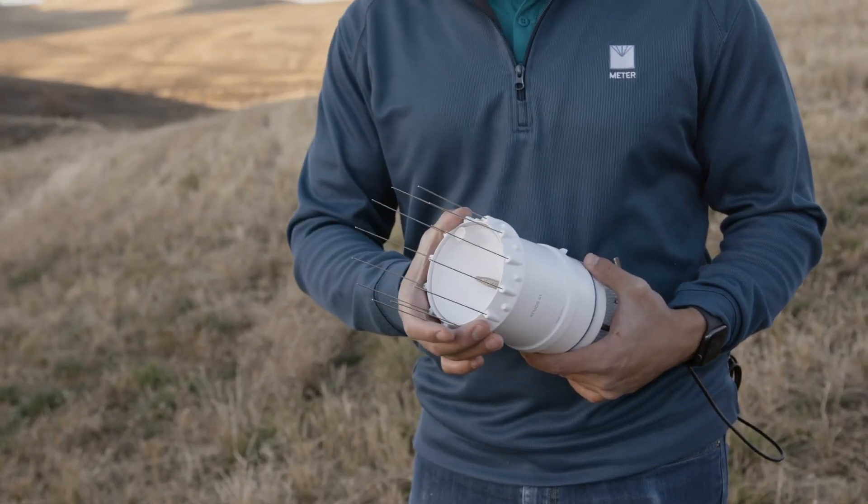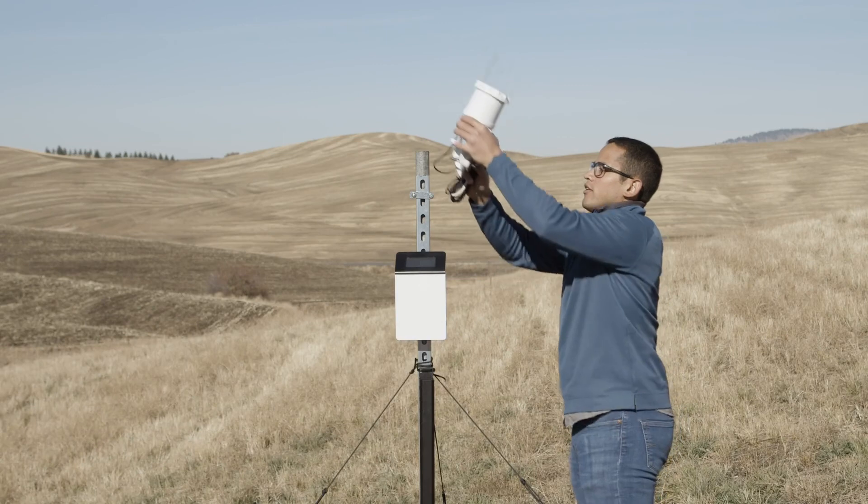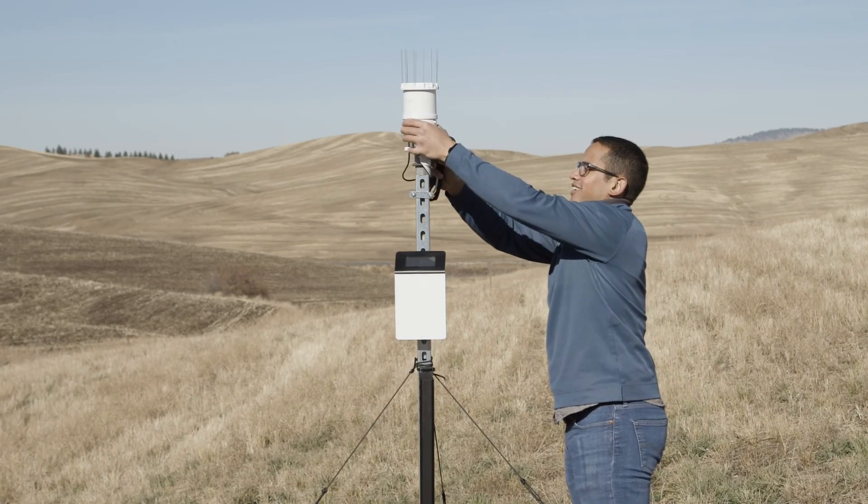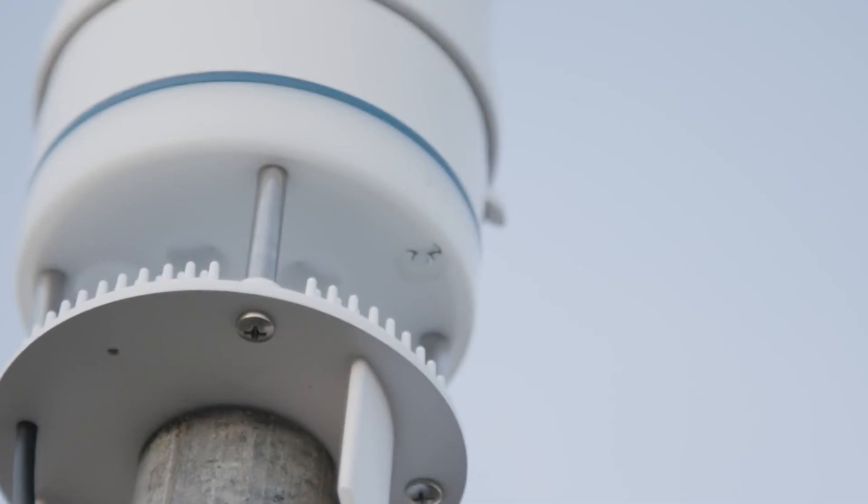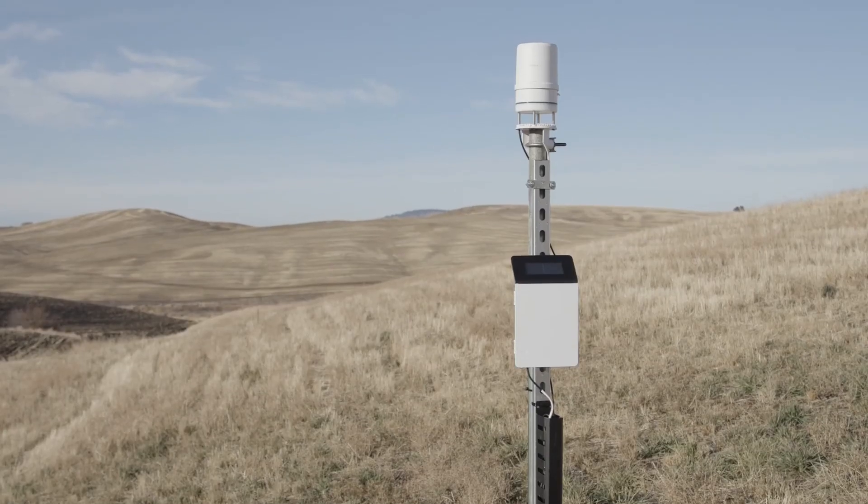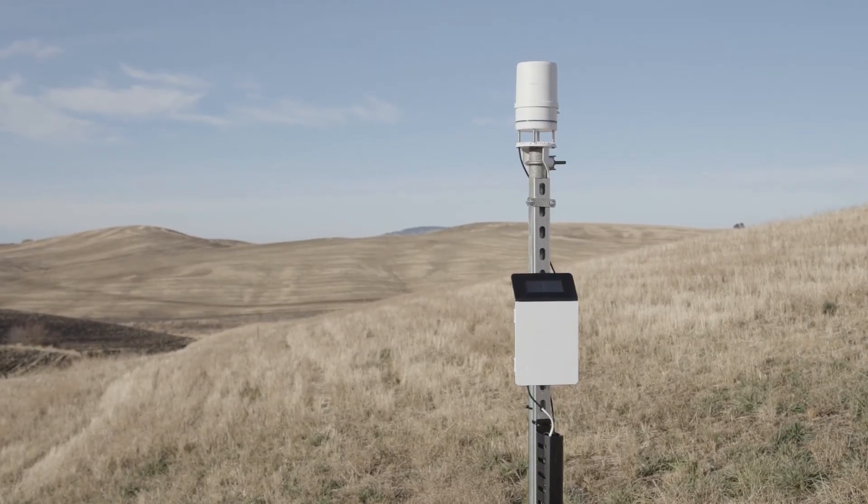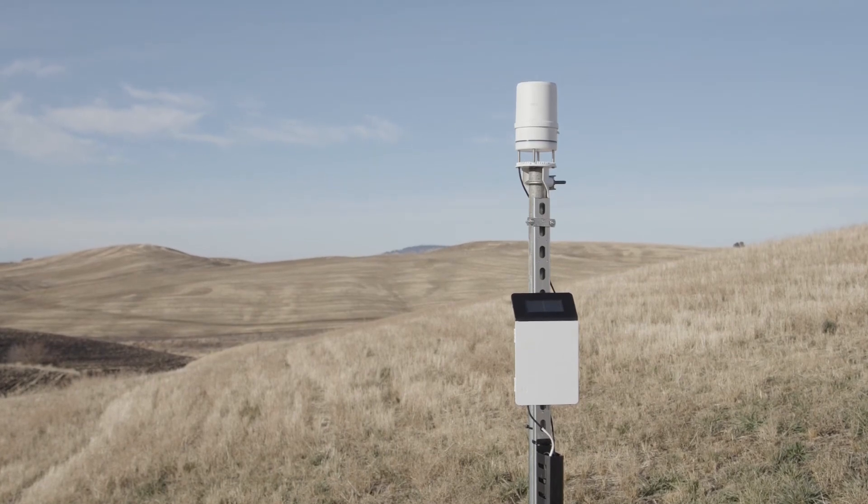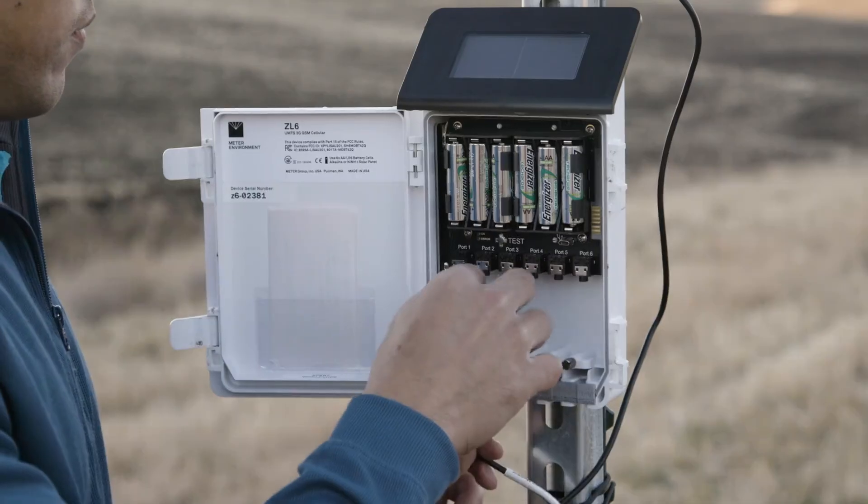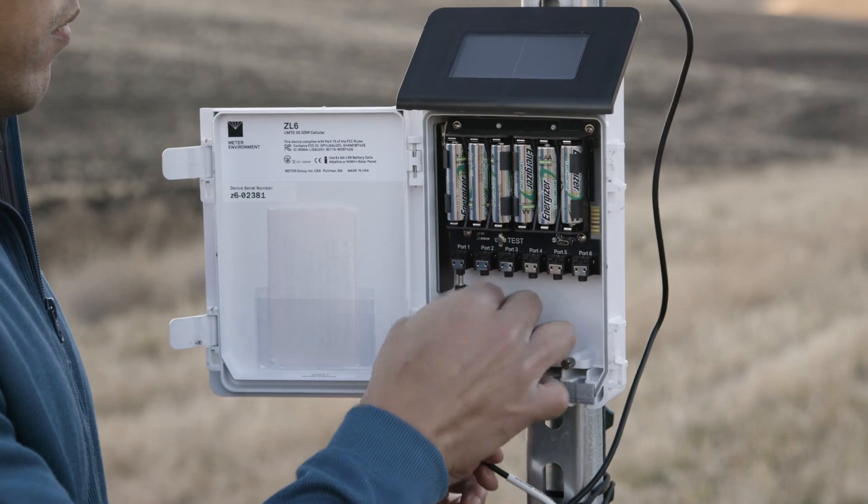When done cleaning, reattach the bird deterrent. Mount the Atmos 41 and level it. The Atmos 41 must be within approximately plus or minus two degrees of dead level, zero, zero, in both the X and Y directions to accurately measure rainfall and solar radiation. Reconnect the Atmos 41 to the data logger.